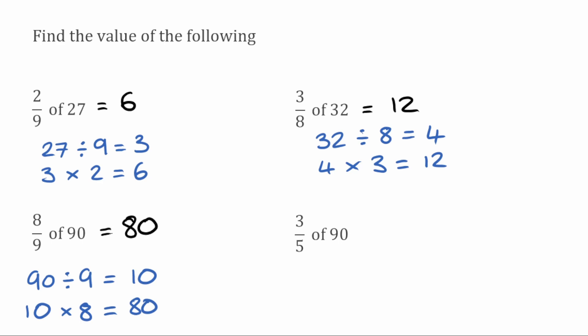And for our final question we've got three fifths of 90. So we're going to start with our 90 and divide by the denominator which is 5. So doing 90 divided by 5 that would actually give us 18. We then take our 18 and we multiply by our numerator of 3. So then 18 multiplied by 3 would give us 54. So our answer to this final question, three fifths of 90, would just be 54.